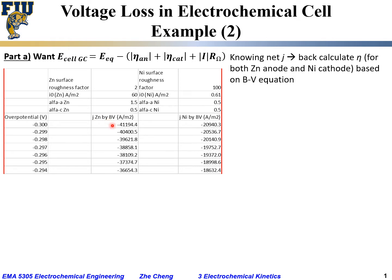Using the Butler-Volmer equation, the current density for the zinc electrode is calculated as the exchange current density for zinc times two exponential terms — one for the anodic and one for the cathodic reaction. The anodic term is positive and the cathodic term is negative. The net current is their summation, and a negative overpotential means cathodic polarization, giving a negative overall current.